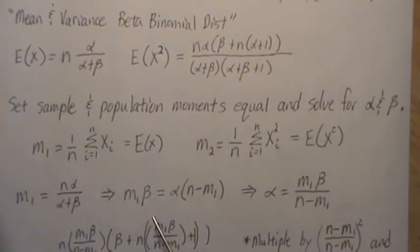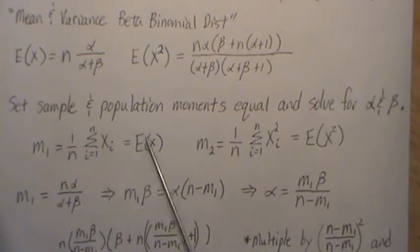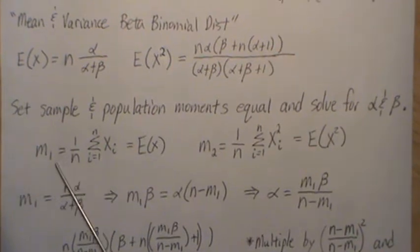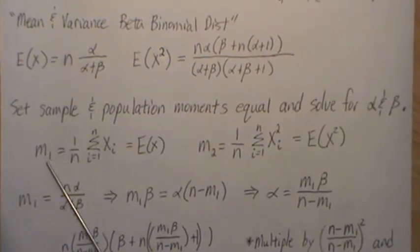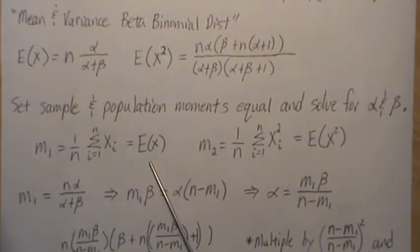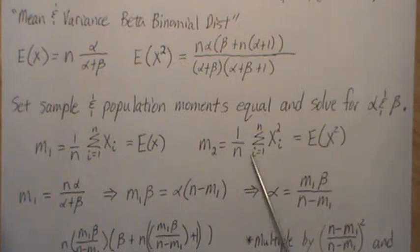In method of moments estimation, what we do is we set the sample and population moments equal and then solve for alpha and beta. So if we let m1 be the first moment, which is just the sum of the x's divided by n, we set it equal to the population moment.